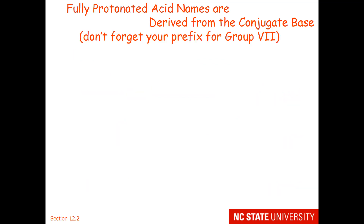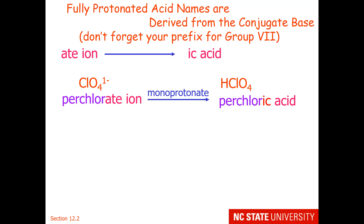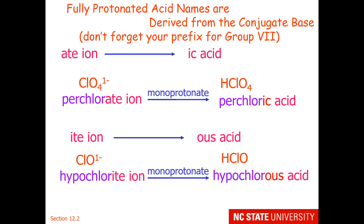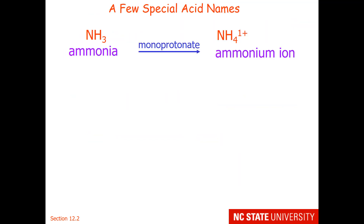There are some prefixes for our ions that are based on Group 7 center atoms, so don't forget your prefixes. For example, the perchlorate ion keeps the 'per' to become perchloric acid. And the hypochlorite ion keeps the 'hypo' to become hypochlorous acid. But you notice they still obey the convention of '-ate' going to an '-ic acid', and '-ite' going to an '-ous acid'.